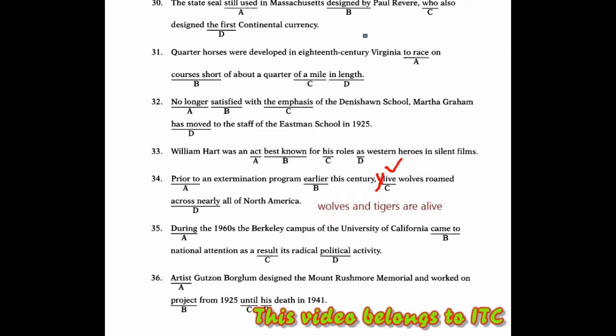Then in section 35, During the 1960s, the Berkeley campus of the University of California came to national attention as a result of. The error here is C. Because after 'result', there should be 'of' here. Why is that? Because result is a noun. Its radical political activity is also a noun. Between noun and noun, we must separate them using 'of'. This makes S the object of the preposition, and its radical political activity - between noun and noun must be separated using 'of', making this also an object of preposition.